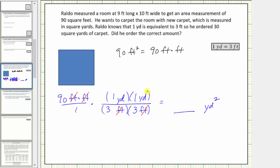So now we multiply like we normally do. The numerator is ninety, the denominator is three times three which equals nine and the units are square yards. And ninety divided by nine is equal to ten and therefore ninety square feet equals ten square yards.